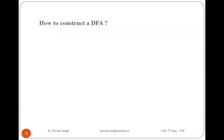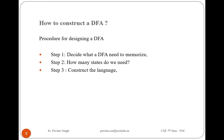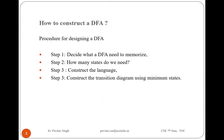So, how to construct a DFA. The procedure has four steps. Step one: decide what a DFA needs to memorize. Step two: decide how many states we need. Step three: construct the language before designing a DFA — language construction is very important. Step four: construct the transition diagram using minimum states. These are the four steps used for the construction of a DFA.